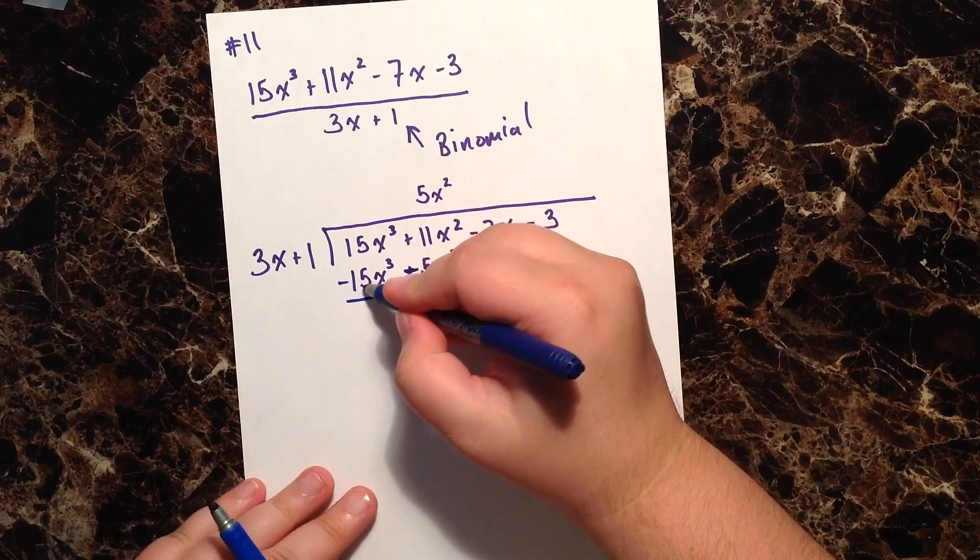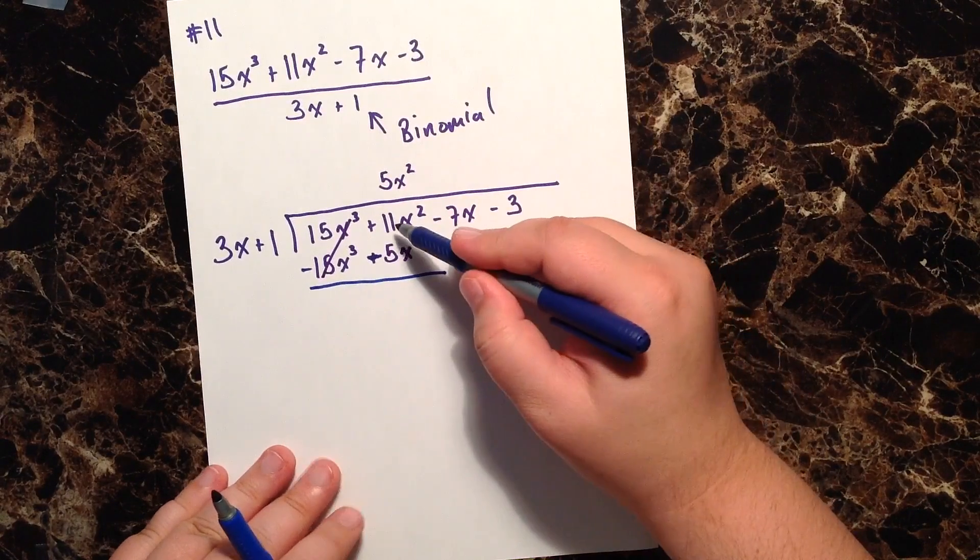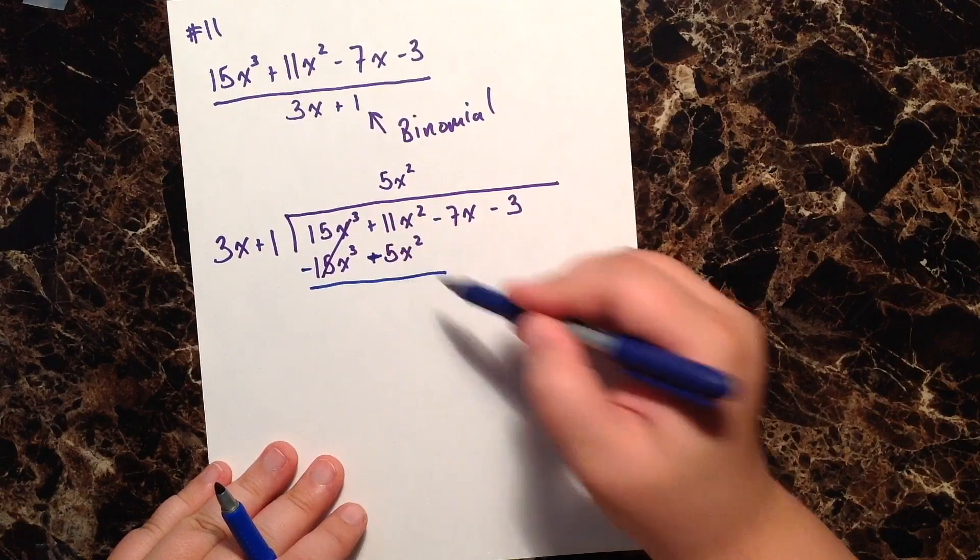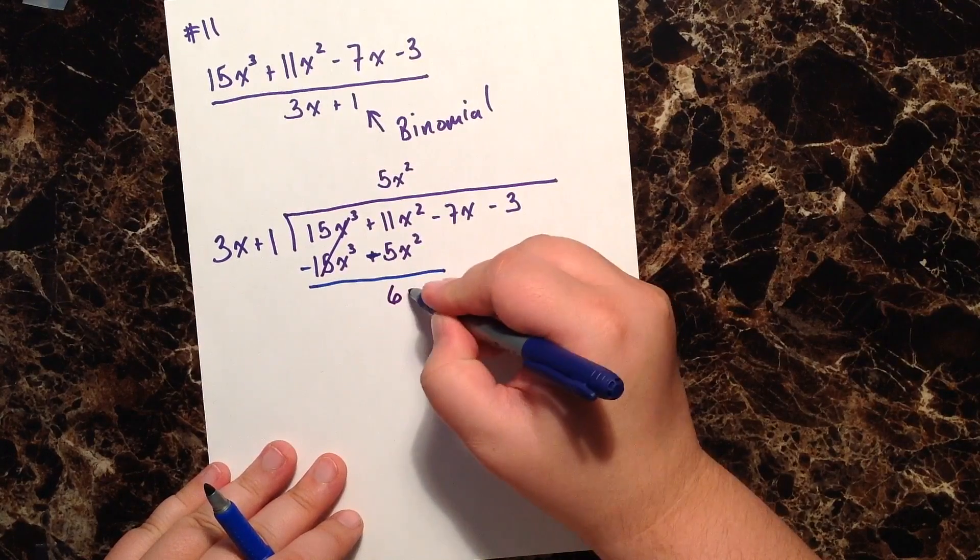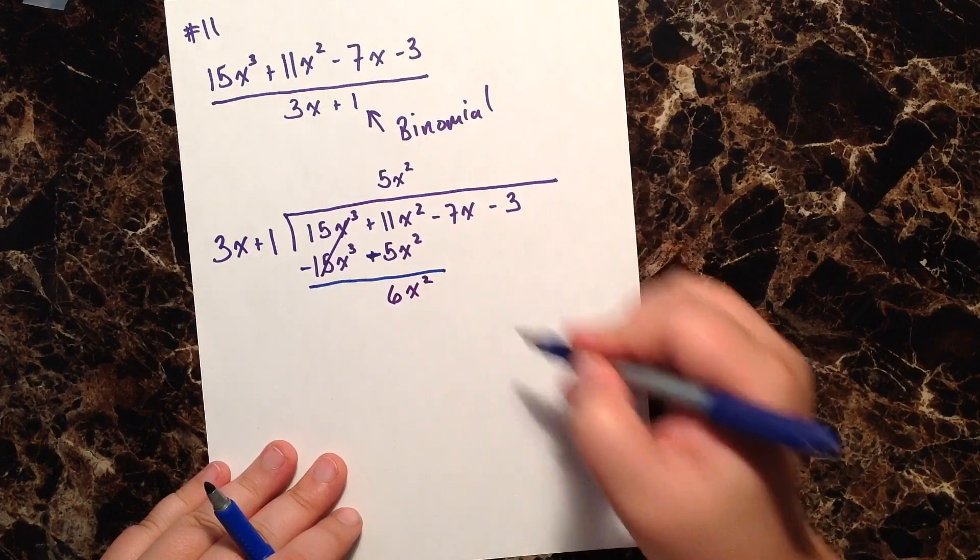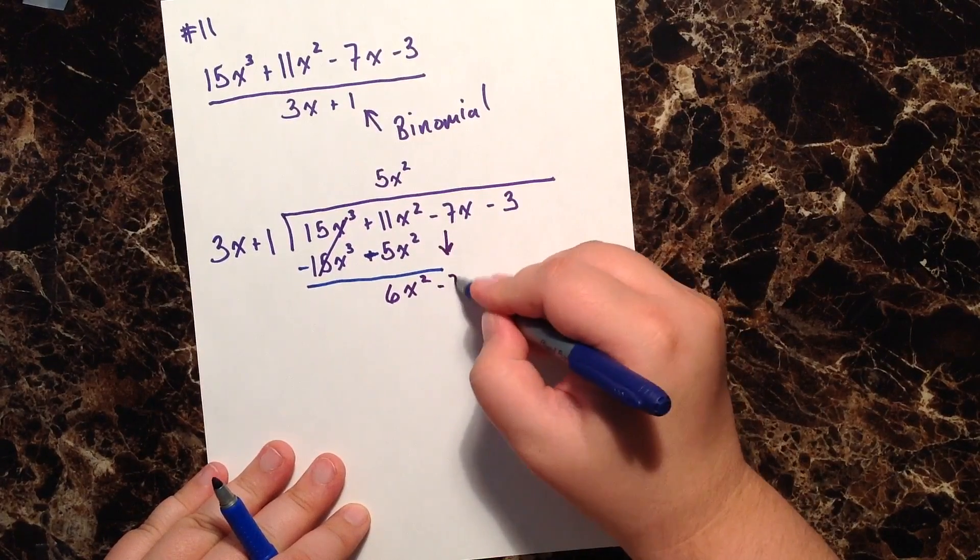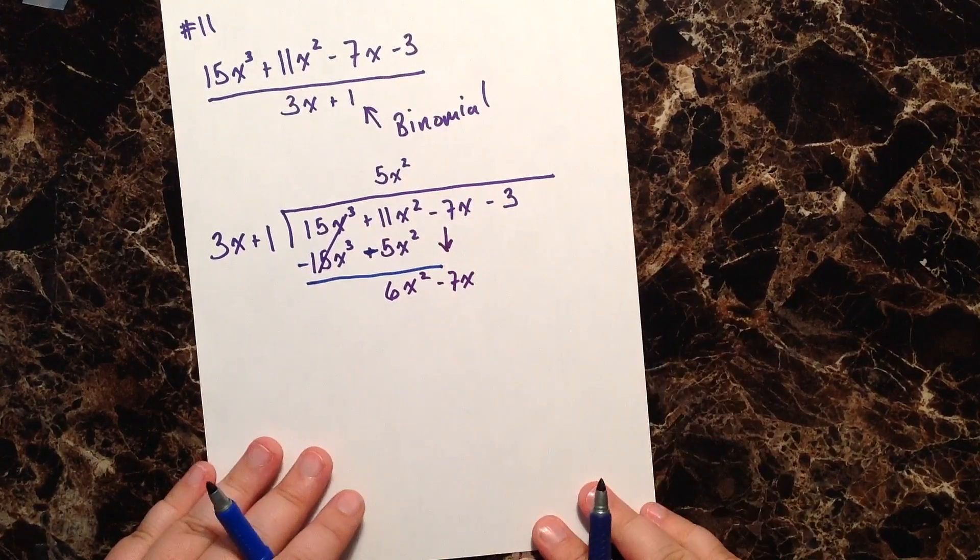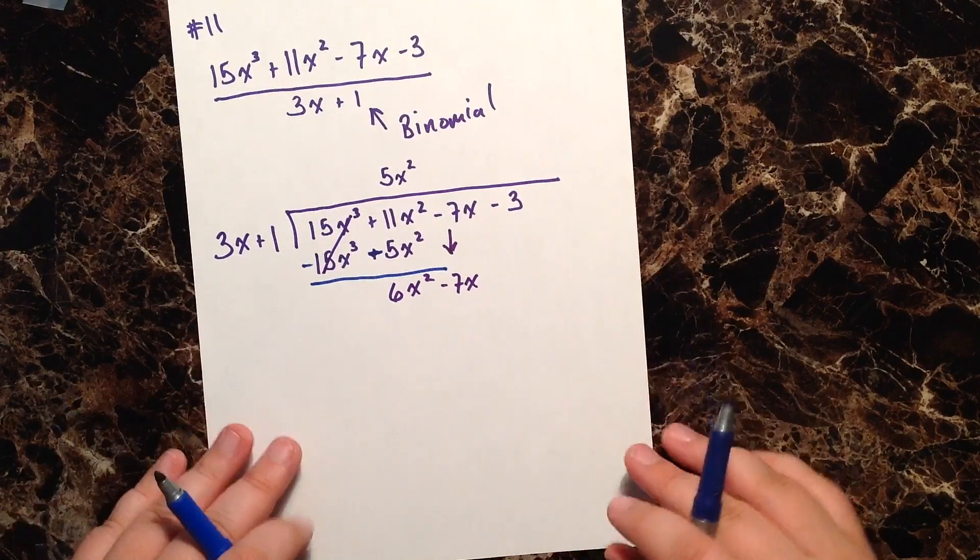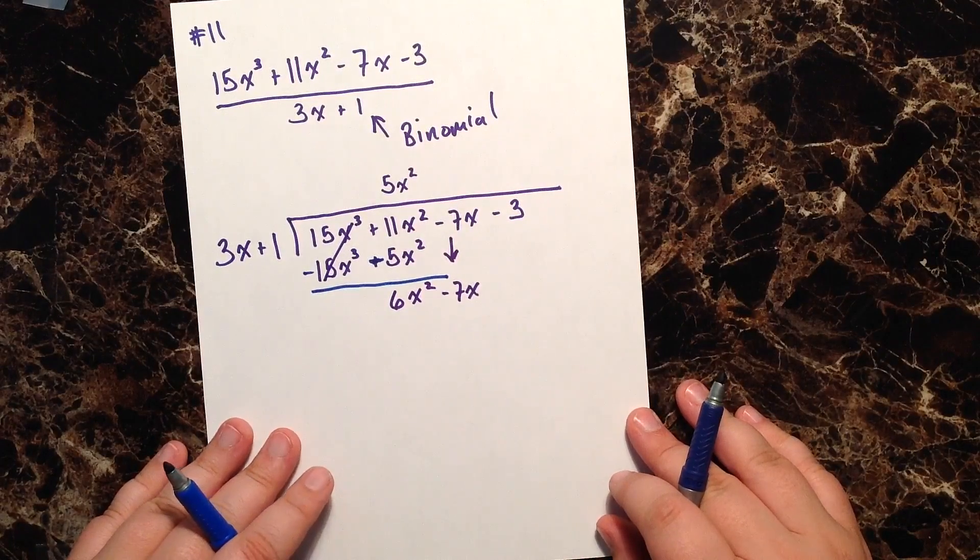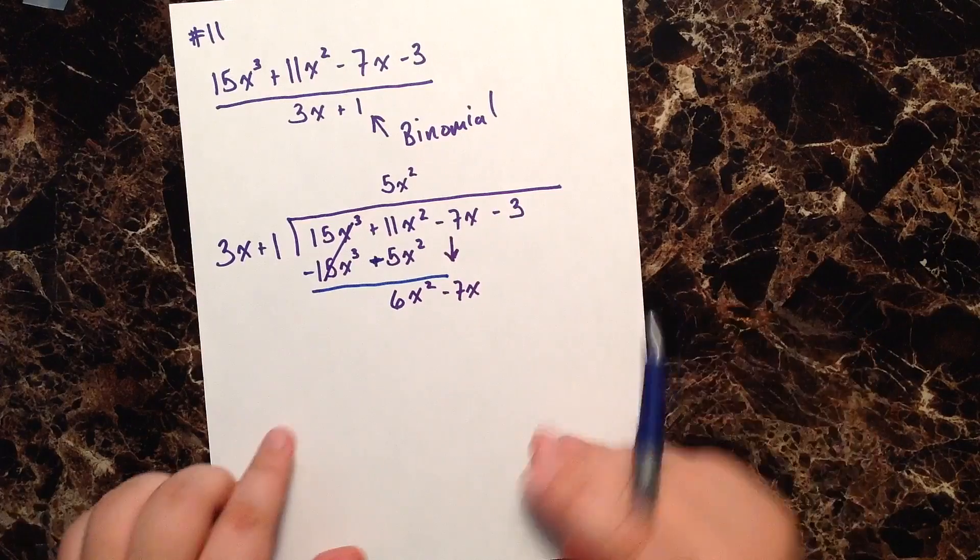So this first column cancels out, and then I have positive 11x squared minus 5x squared. Well that gives me a 6x squared, and then I'm going to bring down my negative 7x and start the whole process all over again. So you can see this is similar, like I said, to long division that we did back in elementary school but a couple of additional steps.